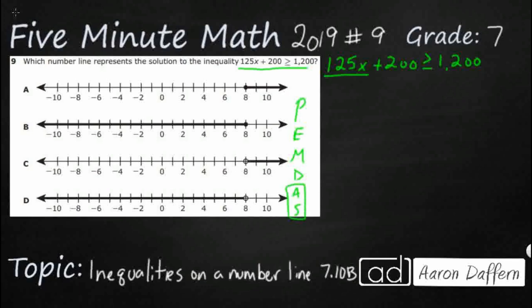And so this addition right here is the weakest link. So we can get rid of this plus 200 if we subtract 200. Now, in order to keep this as a balanced inequality, just like we would a balanced equation, we need to do the same thing to both sides. So those two cancel each other out. I'm simply left with 125x. It's greater than or equal to, this is 1000 now.